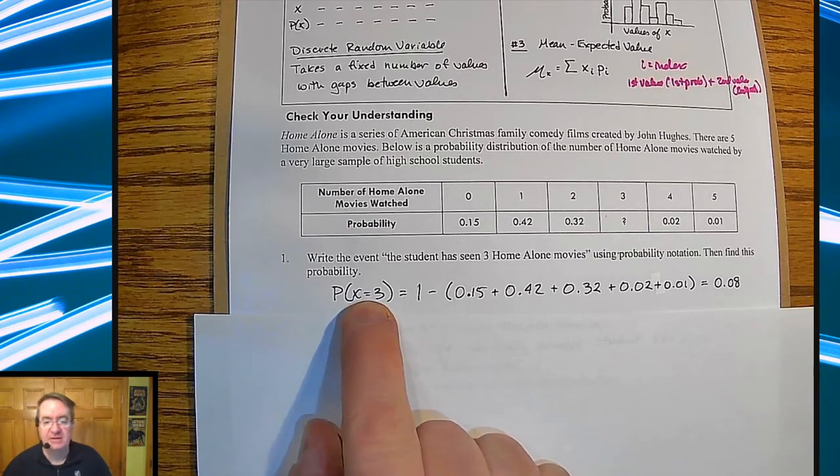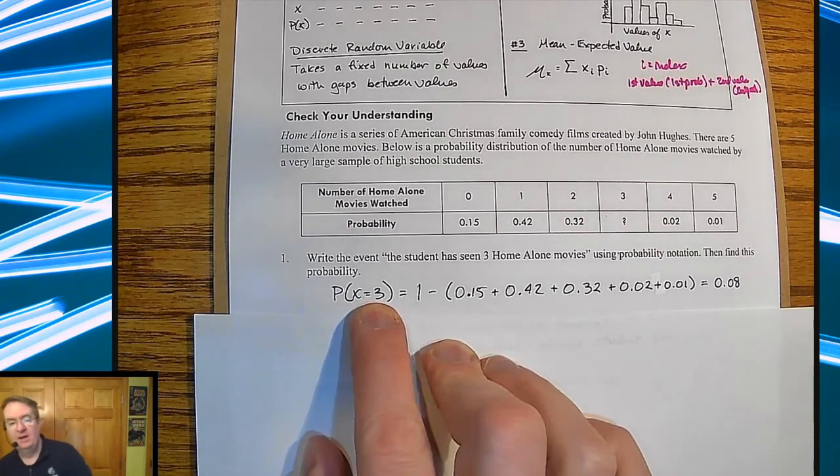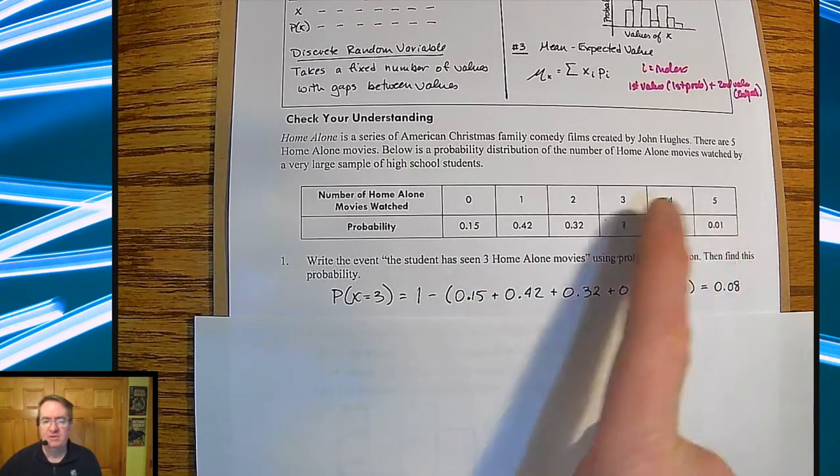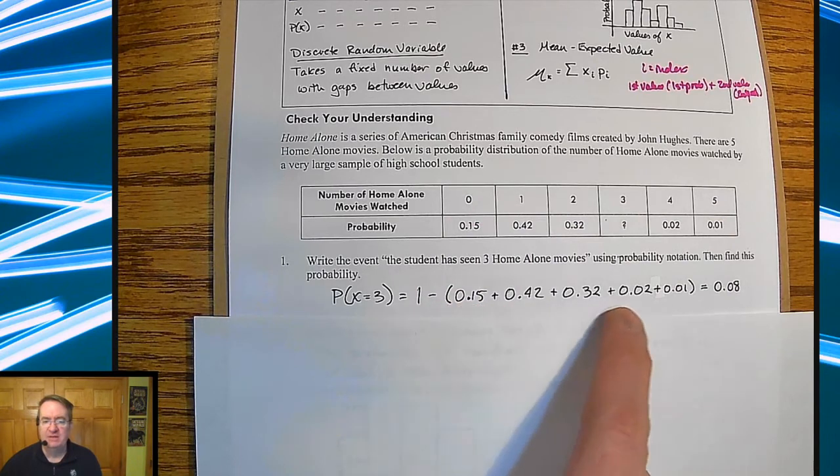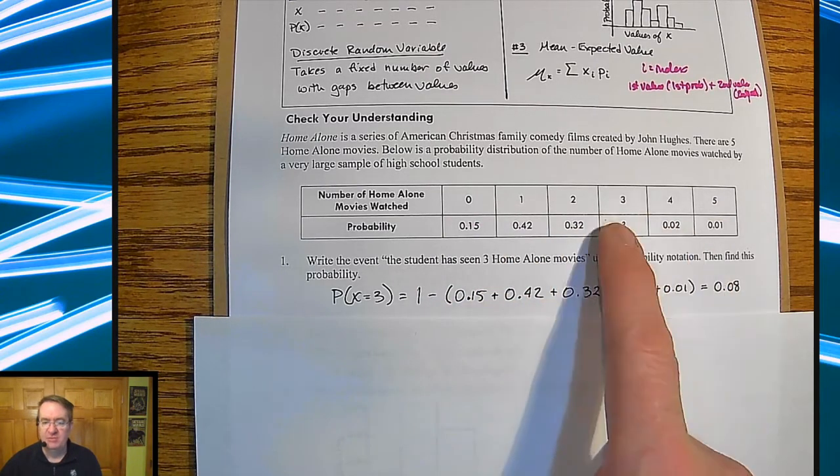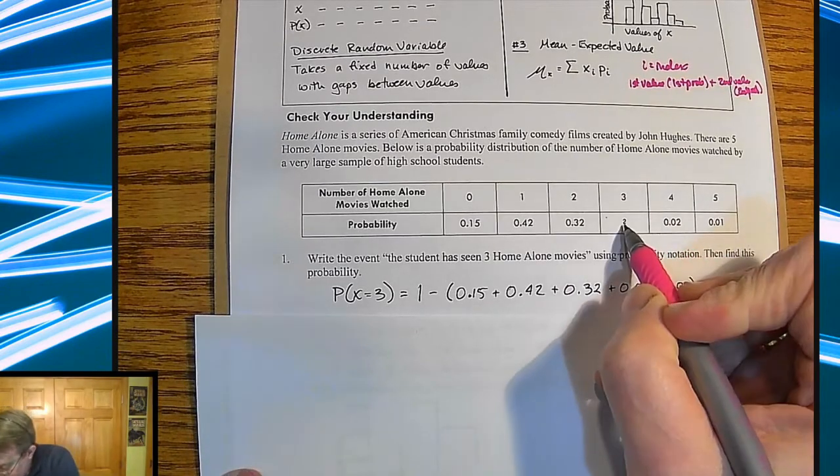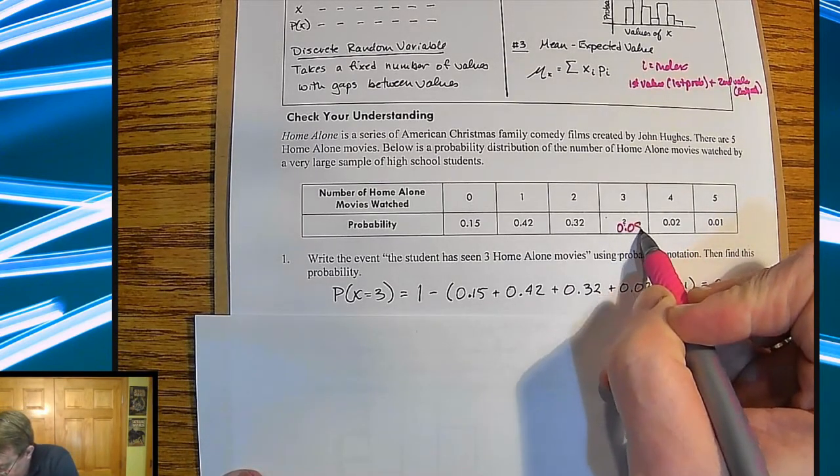So probability of X is equal to three. And then what you're going to do is, remember, one way you can do it is that you can take 100% minus all the different values. So one minus the sum of all the other values. So this number right here is going to turn out to be 8% or 0.08.